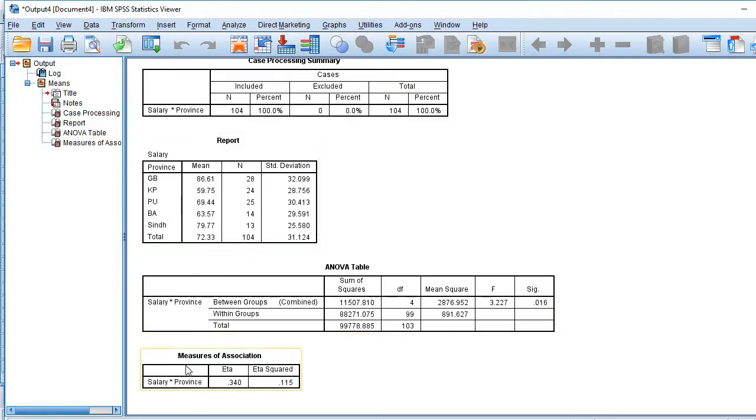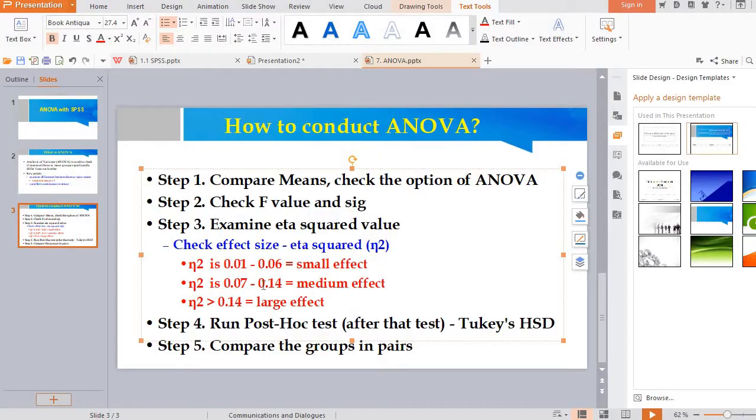Coming to the eta, here this table shows the value of the eta square. It is 0.115, that means it is moderate. So you see here it is 0.115, that means it is in the medium range.